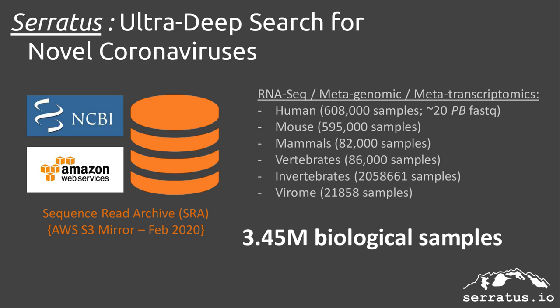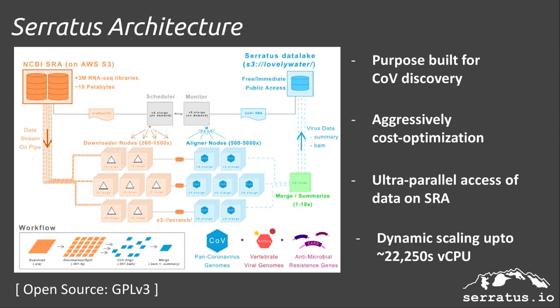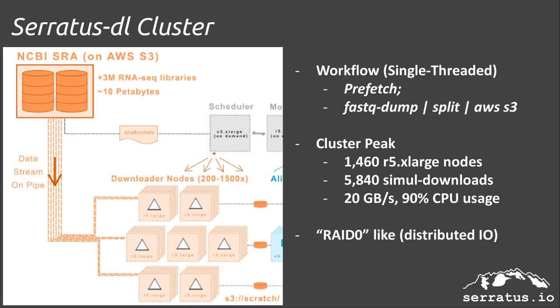Fortuitously, in February 2020, both Amazon Web Services and Google Cloud mirrored the entire SRA archive onto their internal servers, allowing for an unprecedented level of access to this data. To accomplish this, we have developed Serratus, an ultra-high-throughput sequence aligner based on Amazon Web Services. This architecture was designed from the ground up with massive scale alignment in mind, with every design choice focused on aggressive cost optimization and decentralizing the workload as much as possible.